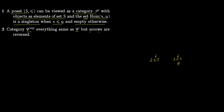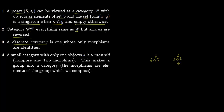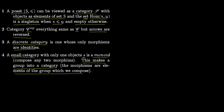The opposite category C^op has the same objects and morphisms as C but with all arrows reversed. A discrete category is one whose only morphisms are identity morphisms — each object A has identity on A, each object B has identity on B, with no connecting morphisms between them. A small category with only one object is a monoid, and this makes a group into a category.